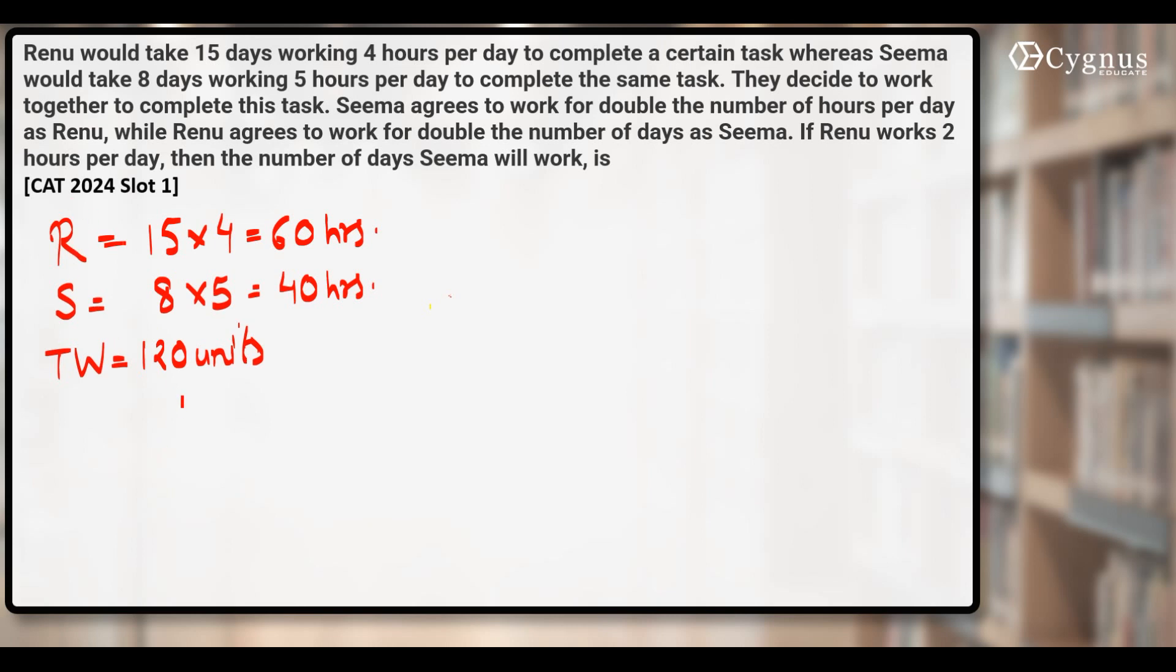Renu can finish 120 units of work in 60 hours, so 1 hour's work of Renu is 120 by 60, which means Renu can finish 2 units of work in 1 hour. Seema can do the same 120 units of work in 40 hours, so 1 hour's work of Seema will become 3 units if they work individually.